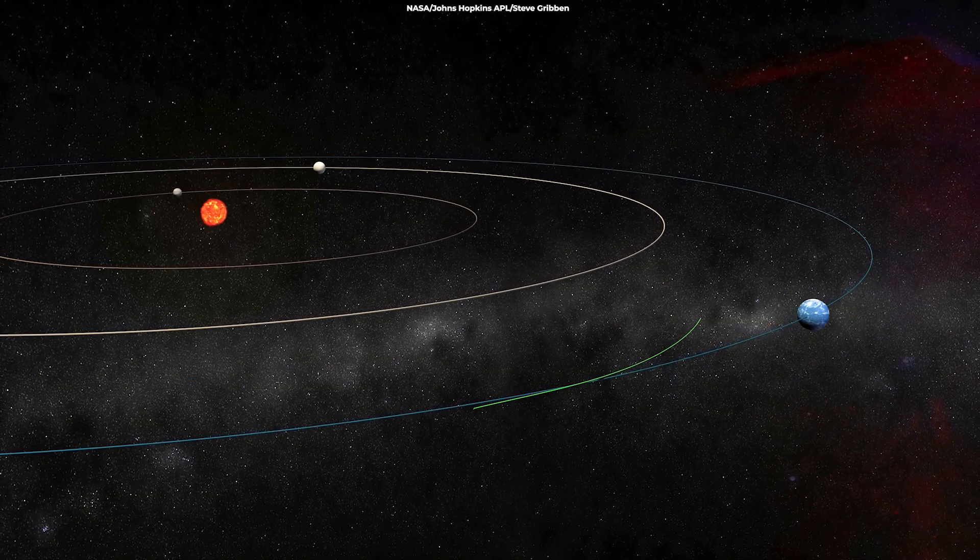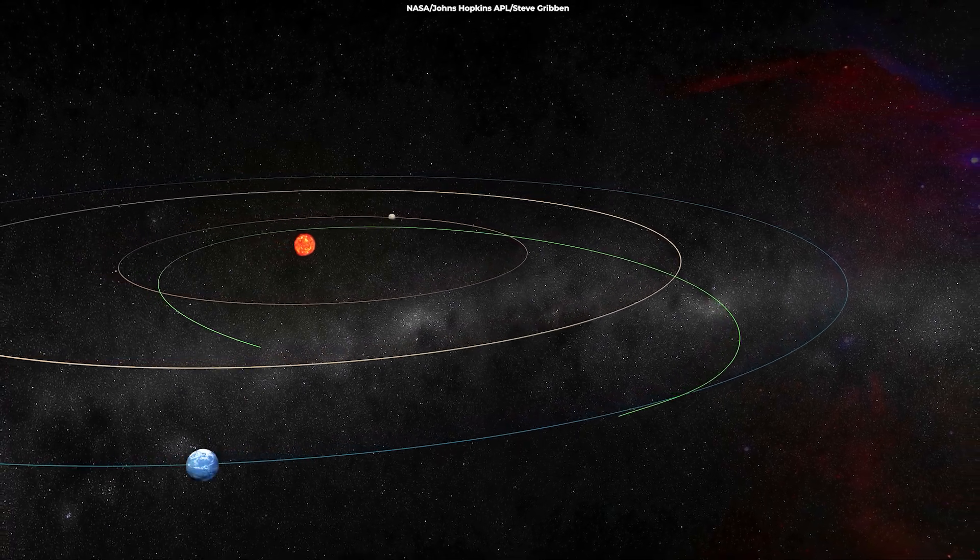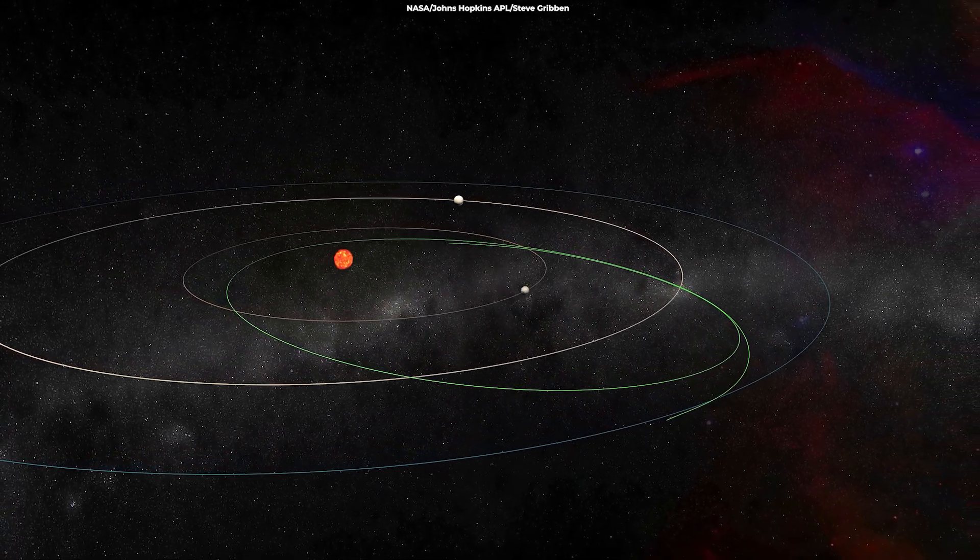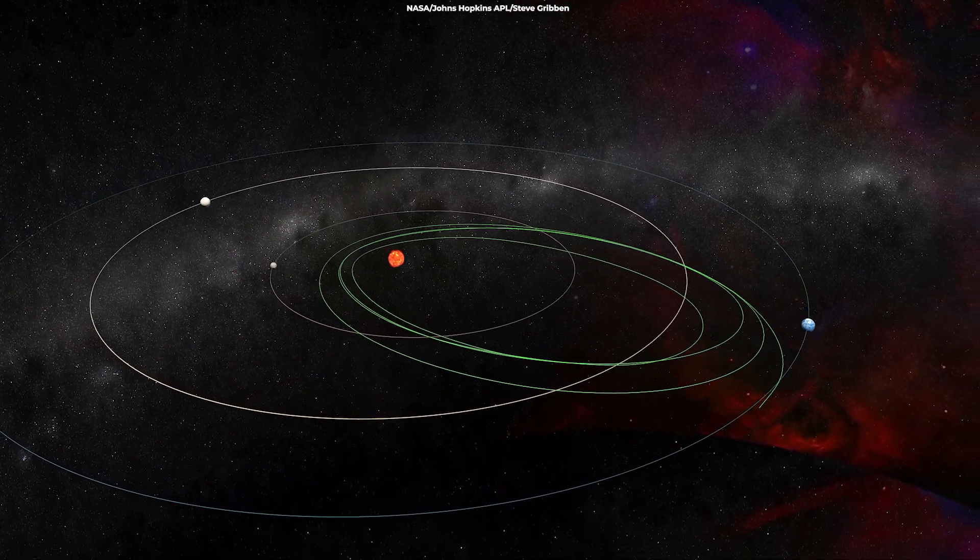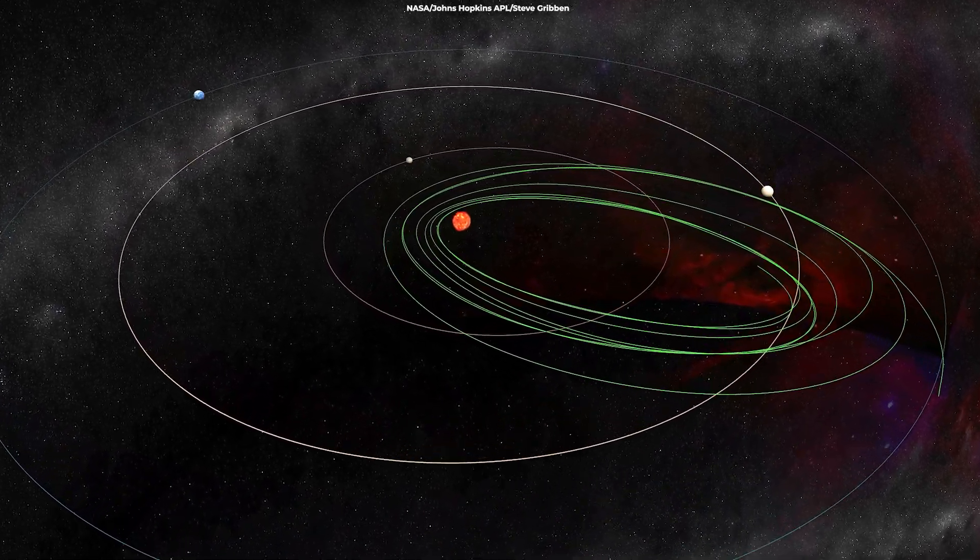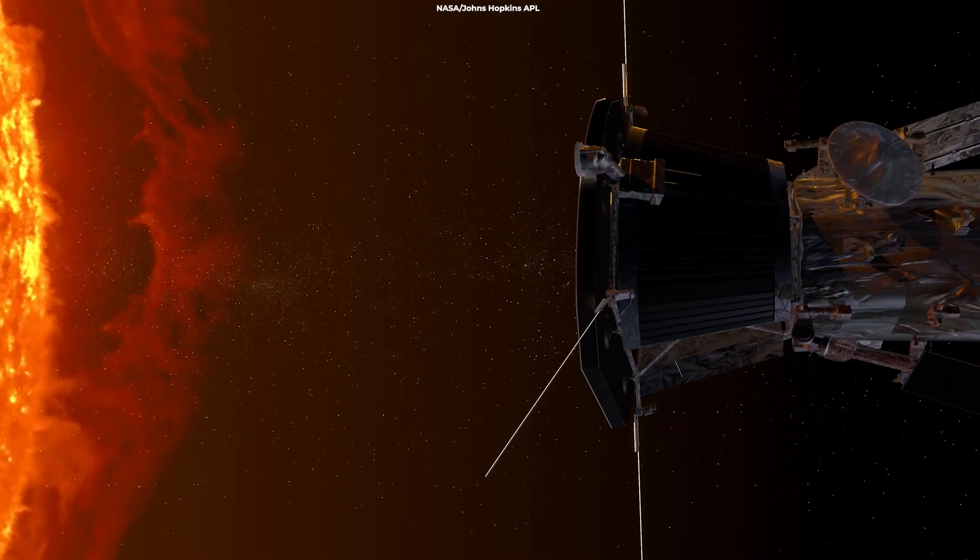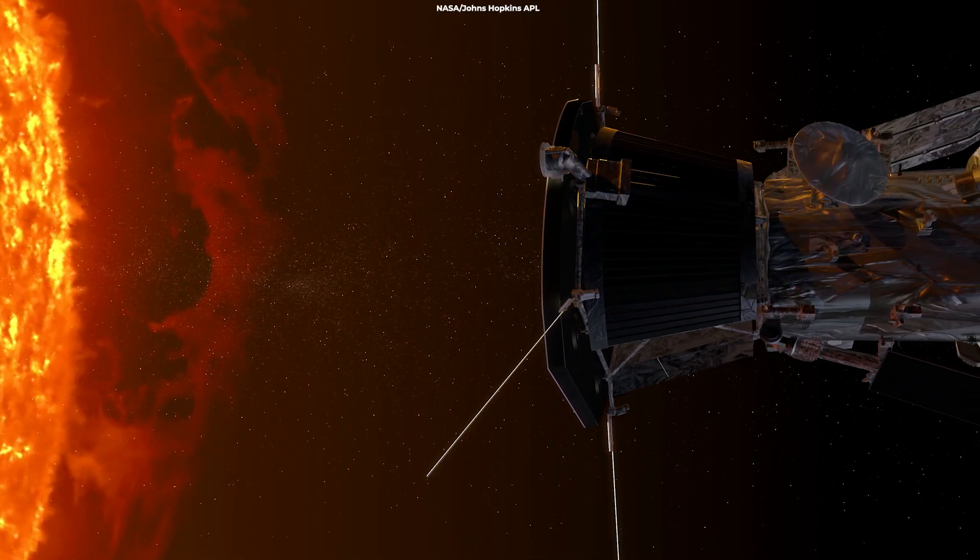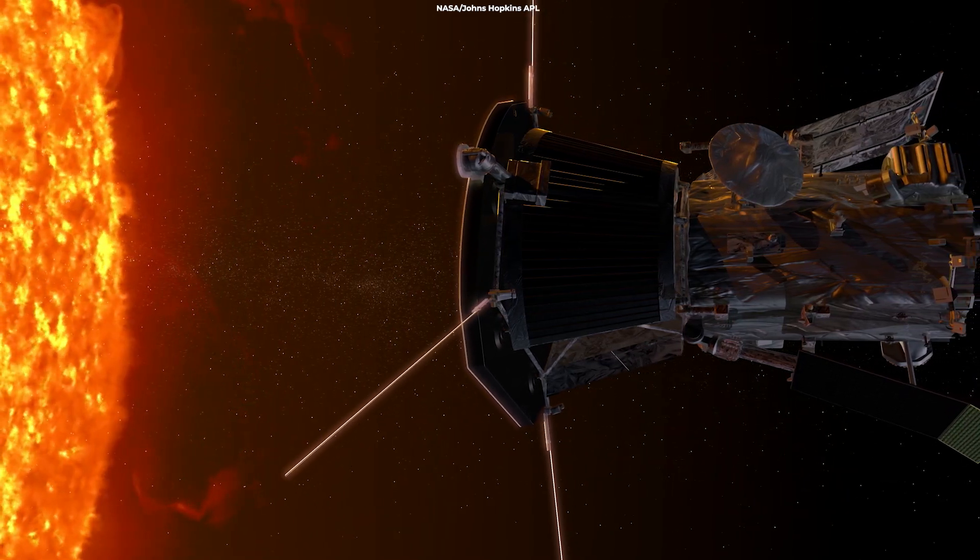Parker's solar probe flew into and out of the corona many times during the flyby. It discovered that the Alfvén critical surface is not shaped like a smooth ball. It has spikes and valleys, as NASA termed it, where the surface protrudes higher or lower from the Sun's center. The surface also likely varies with solar wind activity, which is dependent on the Sun's 11-year solar cycle.